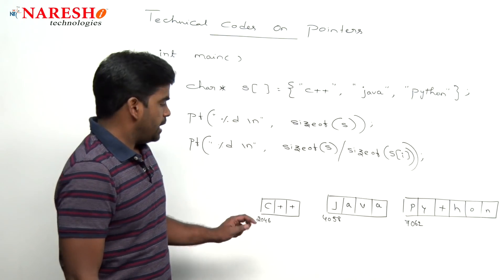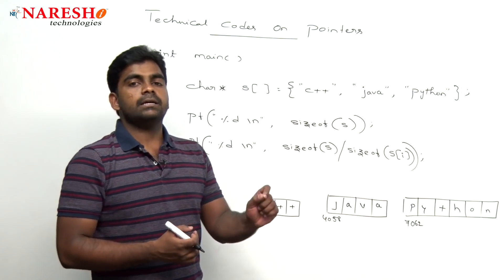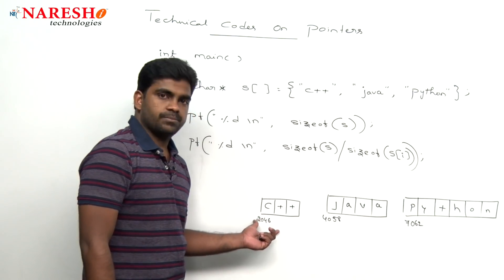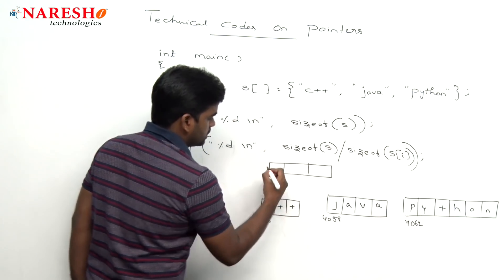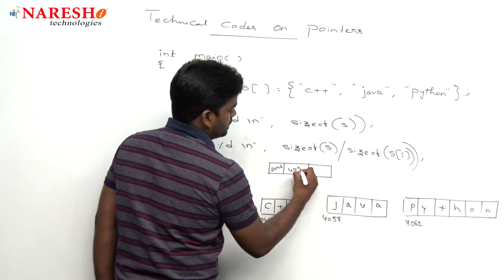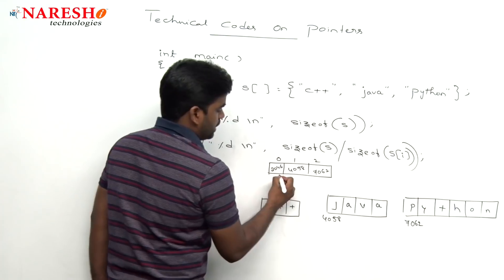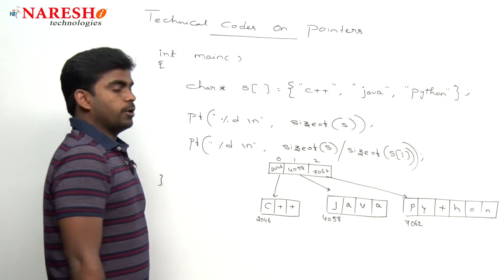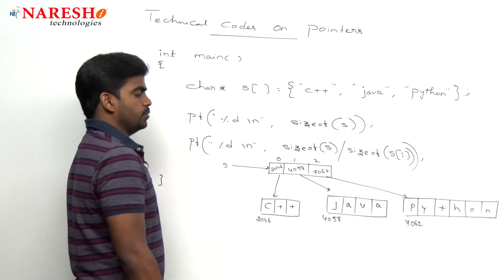What are the three elements? It will not store C plus plus, Java, and Python. What it will store? The pointer to that memory block. This pointer means what? It holds the base address, nothing but the array holds. The first one is 2046, second one is 4058, third one is 7062, it is pointing like this. And S holds by pointing to this one.